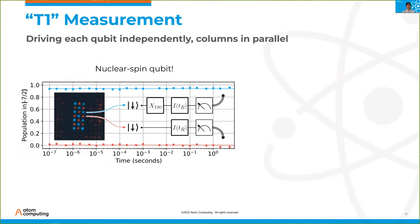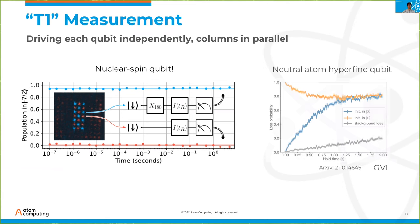We also did a T1 measurement — a measure of how much the qubit states decay just by themselves if you leave them alone. Whether we put atoms in the upper state or the lower state, there's no obvious sign of decay going out to five seconds. Even other neutral atom systems, which are generally pretty stable, don't necessarily have this length of coherence time guaranteed. This is because we're using a very well protected nuclear spin qubit in an alkaline earth atom.